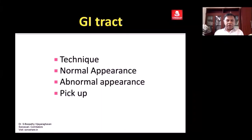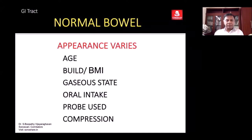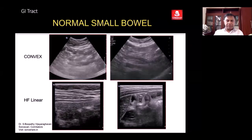Gastrointestinal tract — the normal appearance of bowels, abnormal appearance, and how to evaluate the bowel. A unique feature is the distensibility of the bowel with fluid and gas, and the gaseous state of the individual where the GIT is concerned. When you scan using the convex probe, it is featureless and you are not able to identify much.